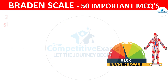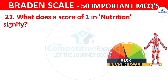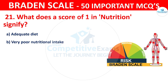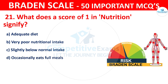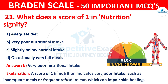Question number twenty-one: What does a score of one in nutrition signify? Your options are adequate diet, very poor nutritional intake, slightly below normal intake, or occasionally eats full meals. The correct answer is B — very poor nutritional intake. A score of one indicates very poor intake such as inadequate meals or frequent refusal to eat, which can impair skin healing.